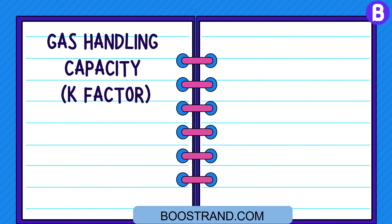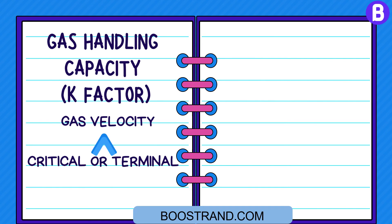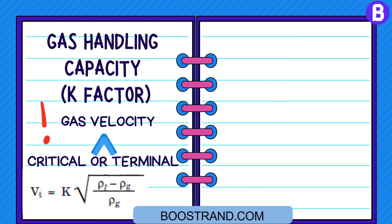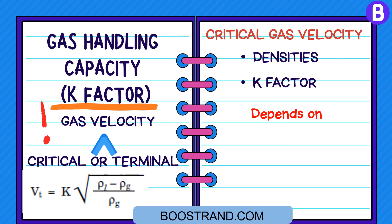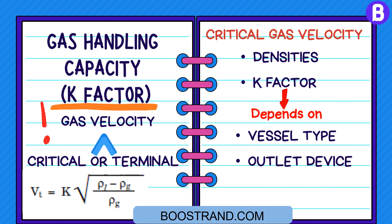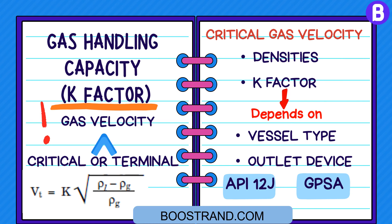Separation of liquid droplets from the gas depends mainly on gas velocity in the vessel. For efficient separation to take place, the gas velocity should be lower than the critical or terminal gas velocity, determined through Brown-Sauder's equation. The critical gas velocity depends on the liquid and gas densities. In addition, it also depends on the gas handling capacity factor, or K-factor. The K-factor depends on the type of vessel and the outlet device used. There are guidelines regarding its values in API 12J and GPSA; however, it should be advised by the vessel manufacturer.